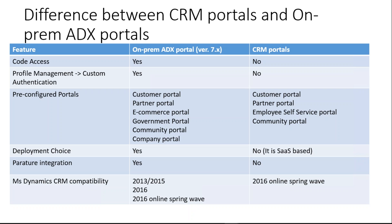The next difference is profile management and custom authentication. In ADX portal we can have custom authentication implemented, whereas in CRM portal we don't have that facility. In ADX on-prem portal it comes with many pre-configured portals like customer portal, partner portal, e-commerce, government portal, community portal, and company portal. But CRM portal only comes with four pre-configured portals: customer portal, partner portal, employee self-service portal, and community portal.